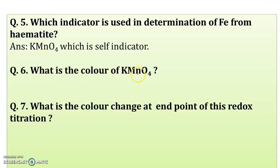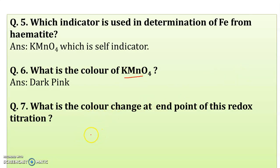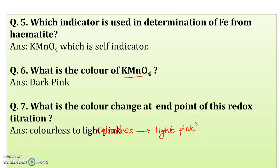What is the color of potassium permanganate? The color of potassium permanganate is dark pink. What is the color change at the end point of this redox titration? In this experiment, the sample solution color is colorless at the beginning. The color change occurs at the end point, and it is colorless to light pink. This light pink is the end point for this redox titration.